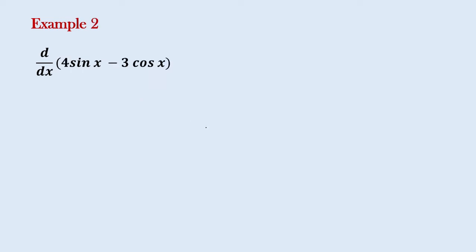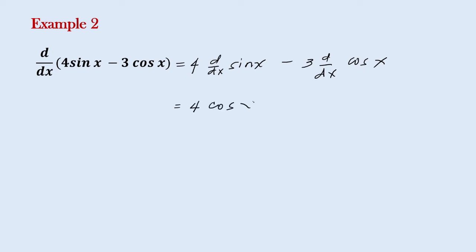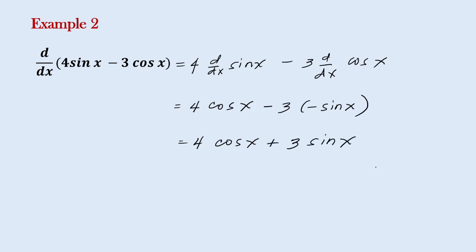Another example: let's say we have 4 sine x minus 3 cosine x. We can have this as 4 times the derivative of sine x, minus 3 times the derivative of cosine x. The derivative of sine x is cosine x, and the derivative of cosine x is negative sine x. So simplifying, we have 4 cosine x, and negative 3 times negative sine x is positive 3 sine x.